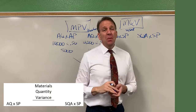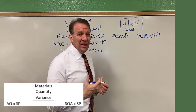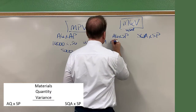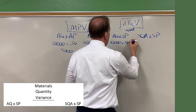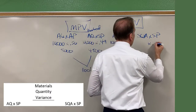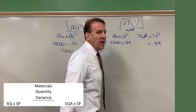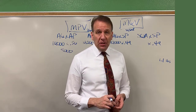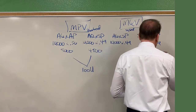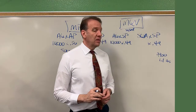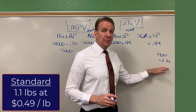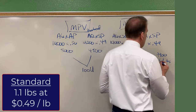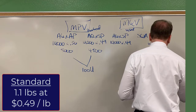In our example, most textbooks just say that what was used was the same as what was purchased, so we'll go with that. We actually used 10,000 pounds, and the standard price was 49 cents — giving us $4,900 on that side. Now, what is the standard quantity allowed? How many jars of salsa did we actually manufacture? We manufactured 9,900 jars. Each one should have used, per our standards, 1.1 pounds. So 9,900 times 1.1 pounds gets us 10,890.